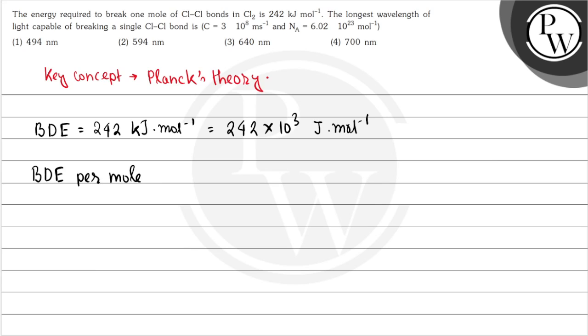So bond dissociation energy per molecule will be equal to 242 × 10^3 divided by Avogadro's number, that is 6.02 × 10^23 Joules, and this will be our E, that is energy.